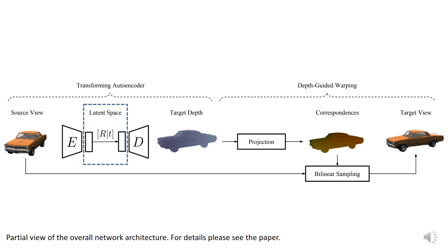After encoding, we apply the desired transformation between the source and target view to the latent code. The transformed code is then decoded to predict a depth map as observed from the target viewpoint.